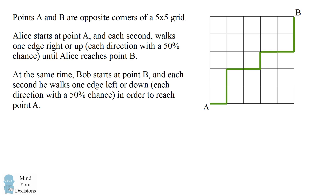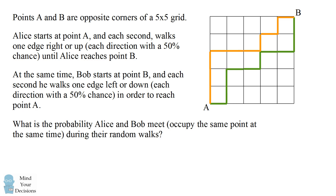At the same time that Alice has started, Bob starts at point B and he moves one edge left or down, each with a 50% probability, until he reaches point A. These two paths happen simultaneously — Alice and Bob are randomly walking at the same time. The question is: what is the probability Alice and Bob meet during their random walks?